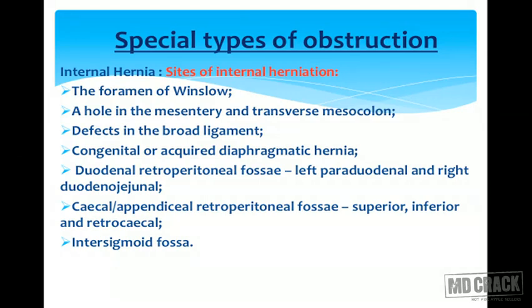In internal hernia, the sites of internal herniation are the foramen of Winslow, a hole in the mesentery and in the transverse mesocolon, defect in the broad ligament, congenital or acquired diaphragmatic hernia, duodenal retroperitoneal fossa, left paraduodenal and right duodenal-jejunal. In the cecal or appendiceal retroperitoneal fossa, it can be superior, inferior, or retrocecal and inter-sigmoid fossa.